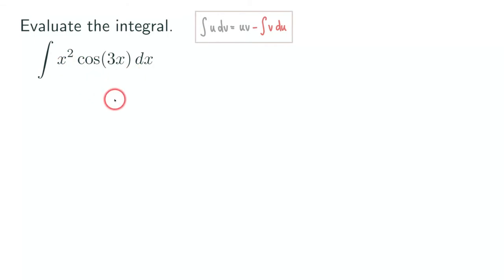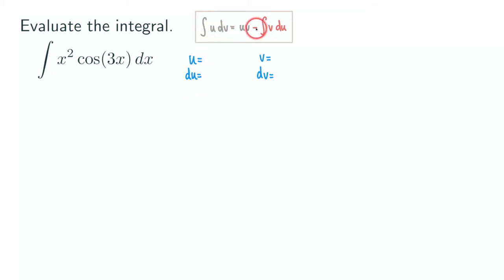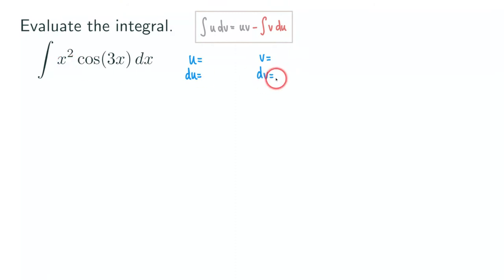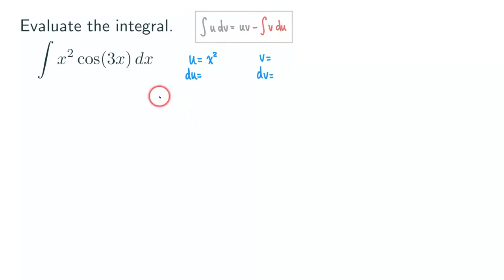Let's look at this function. We are going to set up a table with u and dv, and then v and du. We need to figure out what u is and what dv is. If you have seen my video before, I let u be x squared, because if you let dv be the power function, when you find the antiderivative you raise the power by one, which makes things worse. So we let u be x squared, and then dv must be cosine 3x dx.